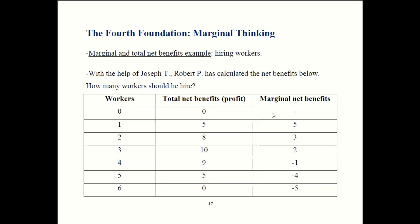You want to keep hiring as long as the marginal net benefits are positive, stop when they're zero, and definitely don't go into negative territory. So even if the total profit column were deleted, you could still work out the right answer just by looking at the marginal net benefits column. Hire until marginal net benefits are zero — that's the hiring rule. This illustrates the earlier point: saying something is good is not the same as saying you need more of it. Having workers gives you ten dollars in profit, but that's not the same as saying you need more workers, because hiring beyond three actually starts to reduce your profit.